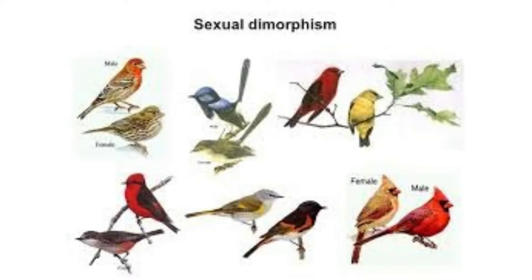Most birds have sexual dimorphism — the sexes are separate and males and females are easy to tell apart. The male is typically the brightly colored one, while the female is less colorful, though this isn't always the case. In some species the male is the nest sitter and the female is more brightly colored. Sexual dimorphism serves the purpose of having the more nondescript bird sit on the nest while the colorful bird distracts predators.